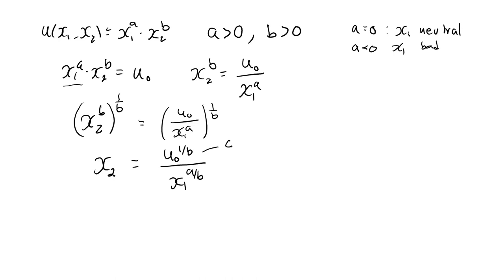U0 raised to 1 over b. Well, this is some constant. It doesn't really matter which constant it is. Different constants will just give me different indifference curves. So I can write this as some constant c divided by x1 a over b. And keep in mind here that a over b is also strictly positive, since both are. Alternatively, I can write this as c times x1 minus a over b.